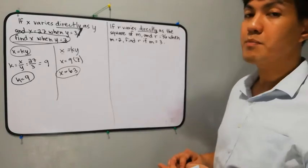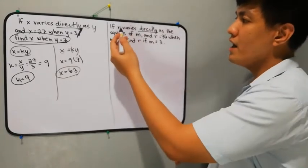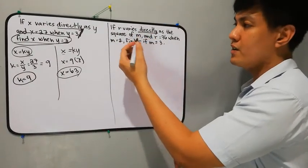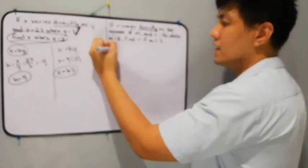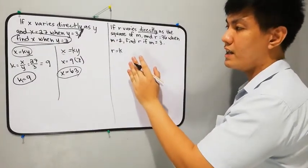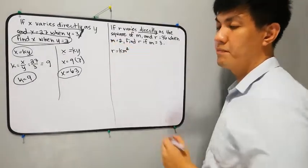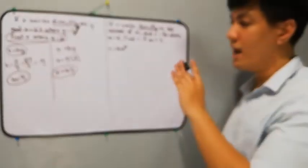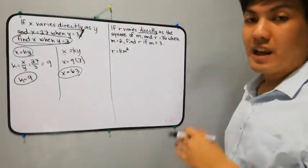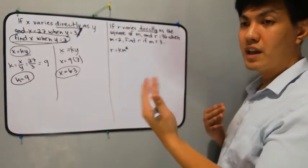Second step: write the equation. R varies directly as the square of M. Since it's directly, k and the variable are together. So the equation is R is equal to k times M squared. That will be our equation. The next step is to separate or divide the statement into two.